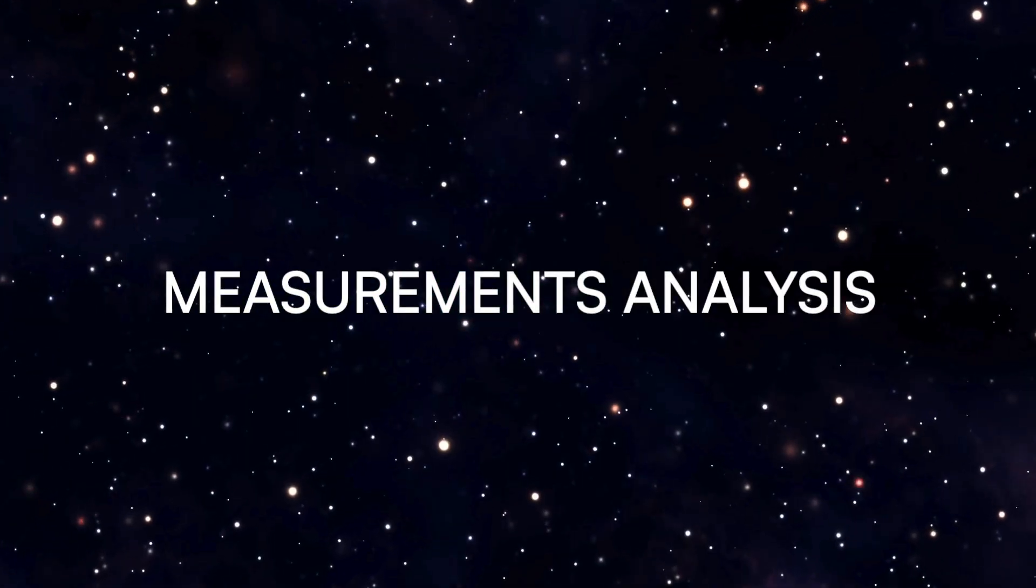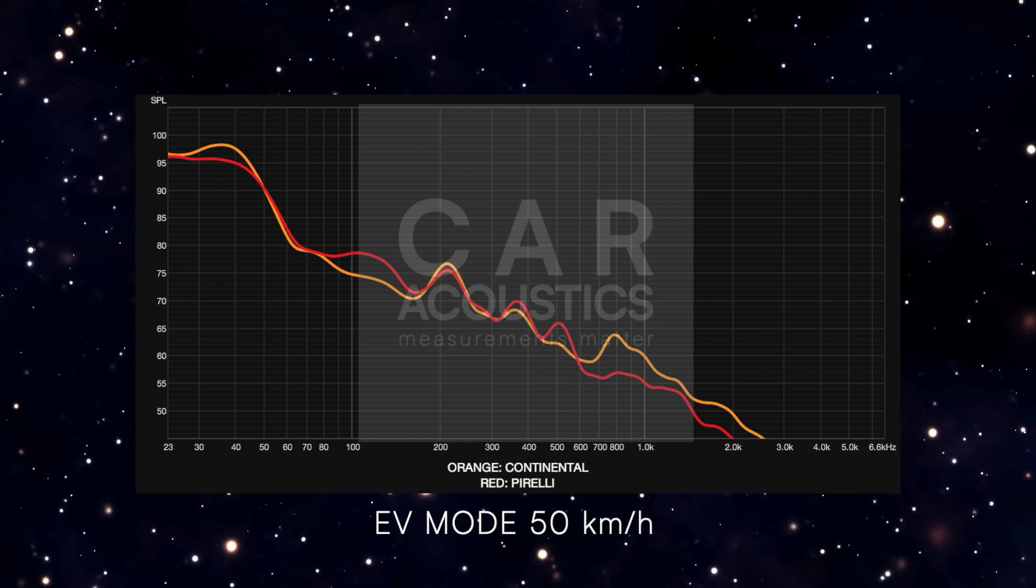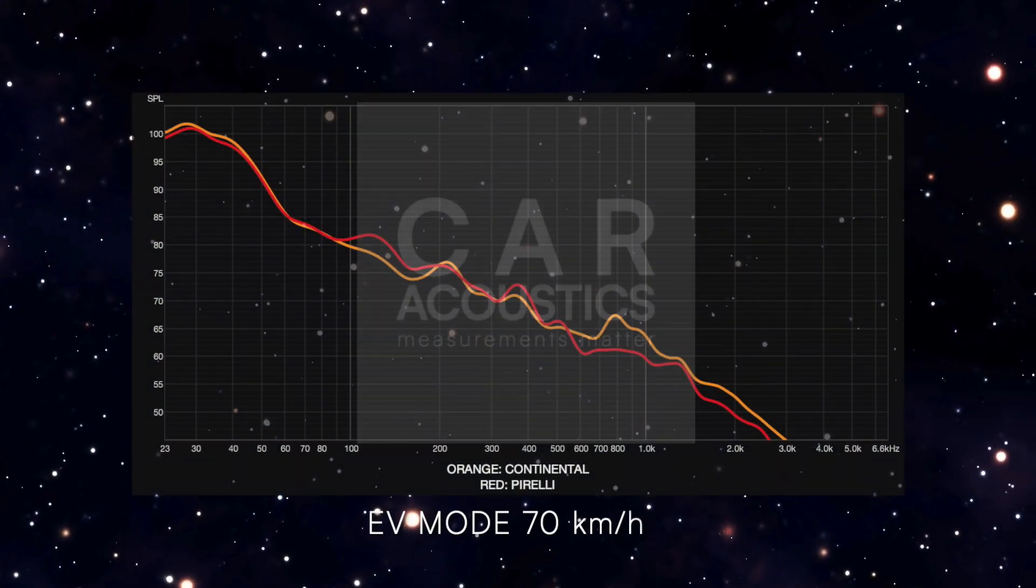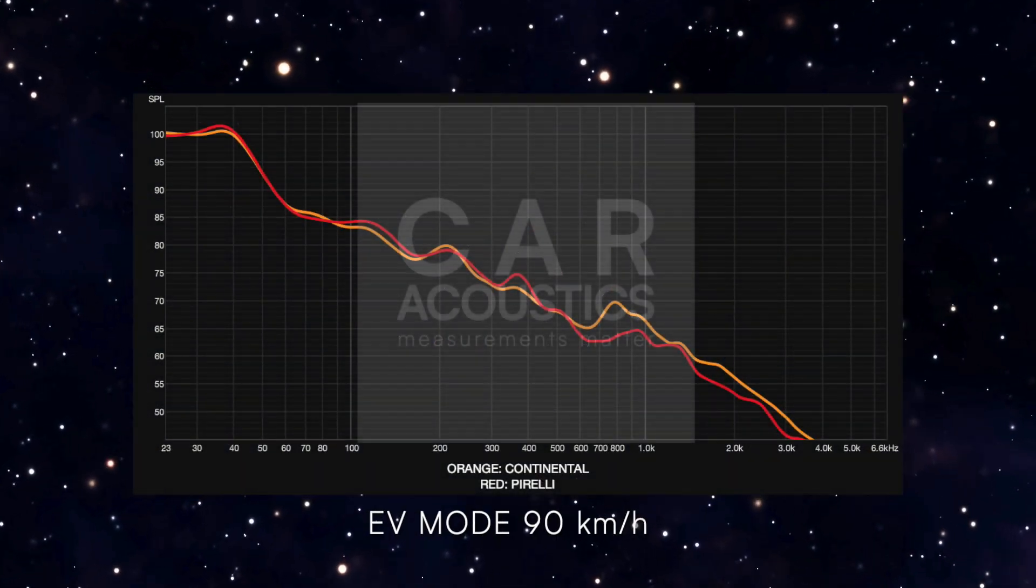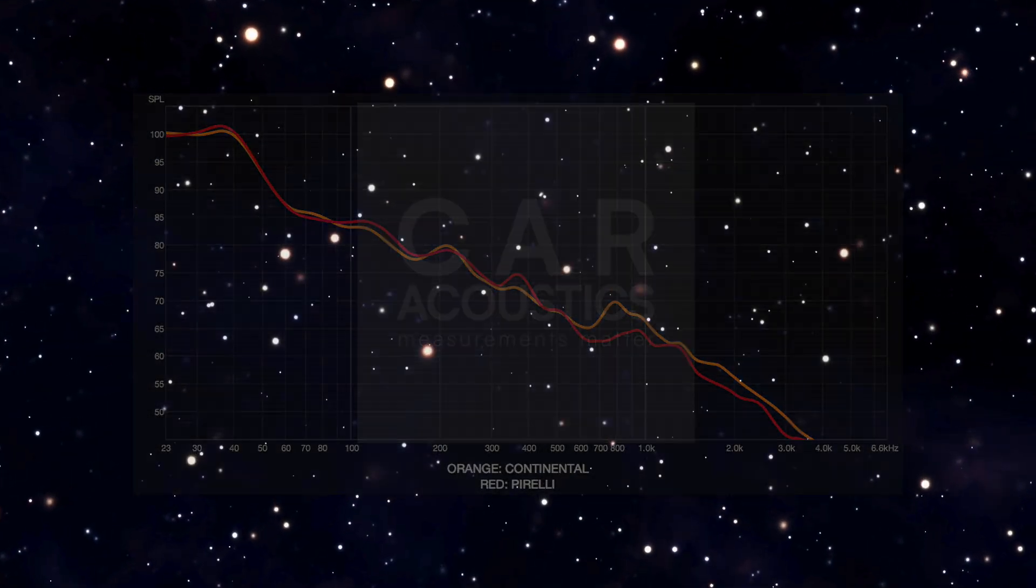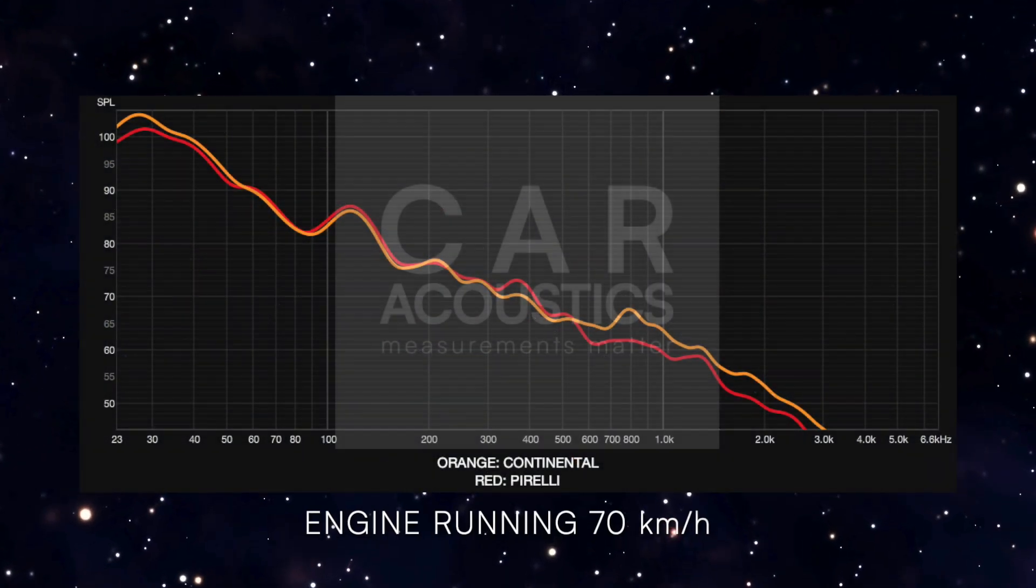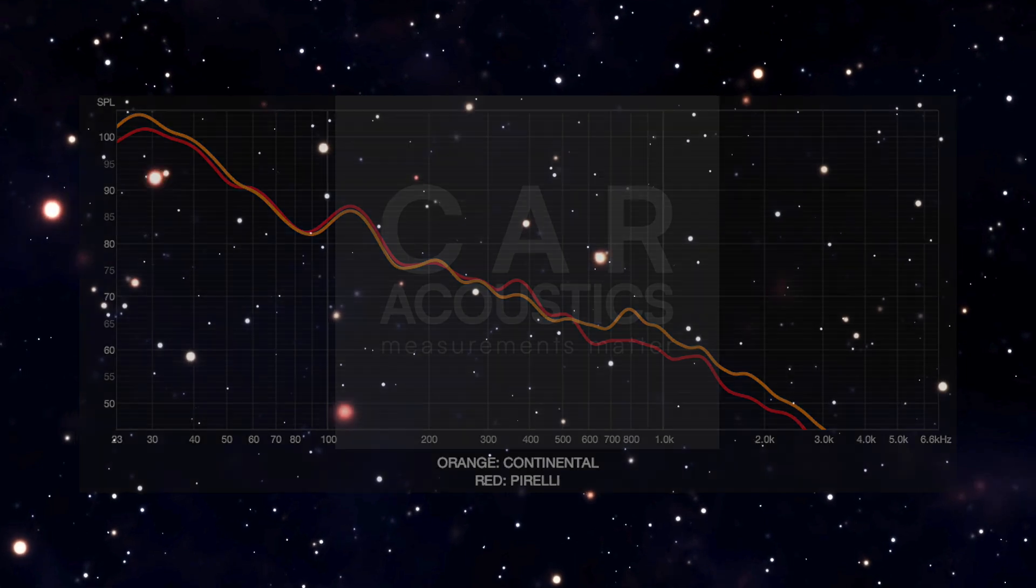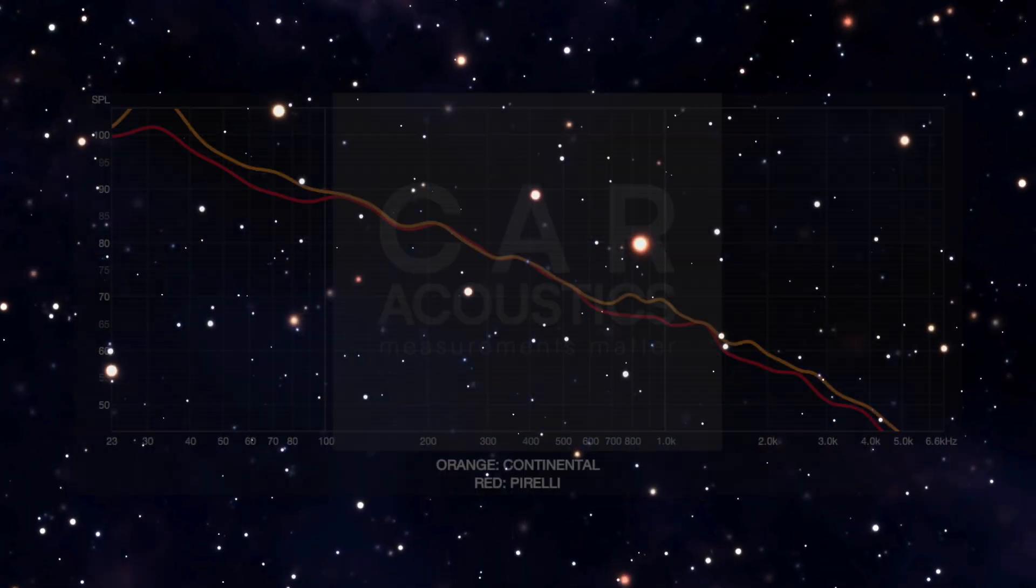Now let's take a look at the graphs from the start. It's clear that the Continentals are indeed louder and the difference is significant. They generate higher noise levels starting at frequencies above 500 Hertz, with the zone between 500 and 1000 Hertz standing out the most.